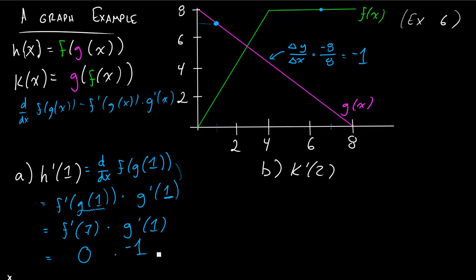So f prime of 7 is 0. And so if you actually multiply this out, h prime of 1 is going to be 0. Now let's take a look at k prime of 2. Hopefully this one isn't 0 as well.